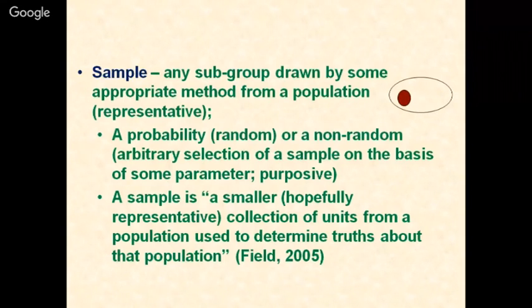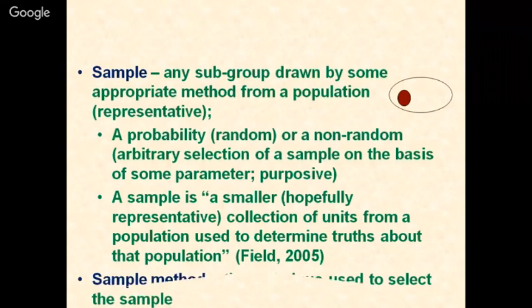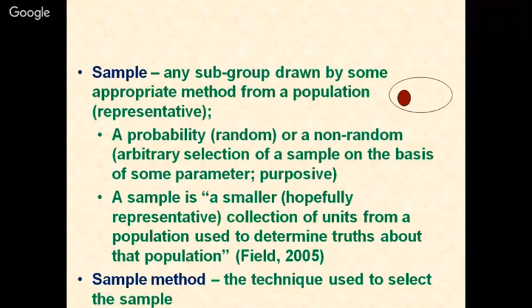A sample is a smaller, hopefully representative collection of units from a population, used to determine truth about that population. Only when it is representative can you say with confidence that the results are genuine after the research is completed. The sample method is the technique used to select the sample, and there are a number of sampling methods depending upon the purpose, resources, and time available.